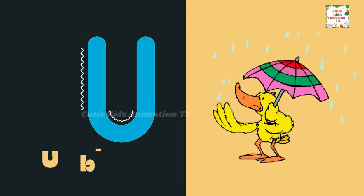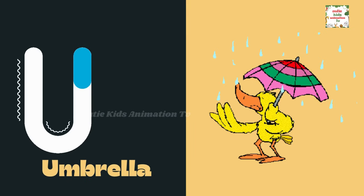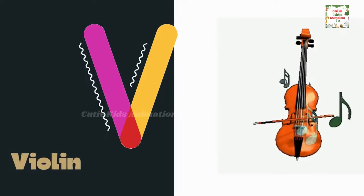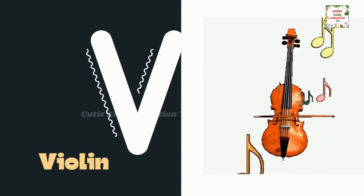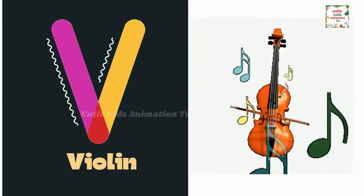U is for umbrella. U, U, umbrella. V is for violin. V, V, violin.